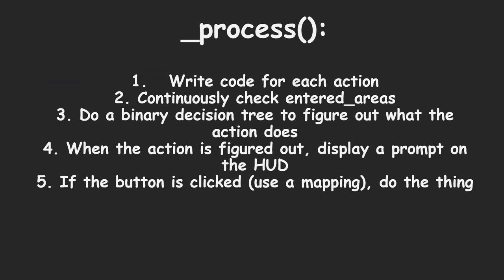In your process function — whether physics_process or otherwise — you write code for each action. Each button (A, B, X, whatever) gets a binary decision tree. You continuously loop through the entered areas array, run the decision tree to figure out what the action does, display a prompt on the HUD, and if the button is pressed you do the thing. It's really that simple.